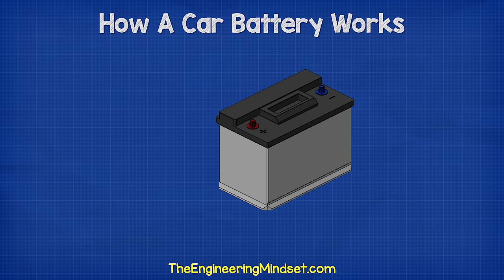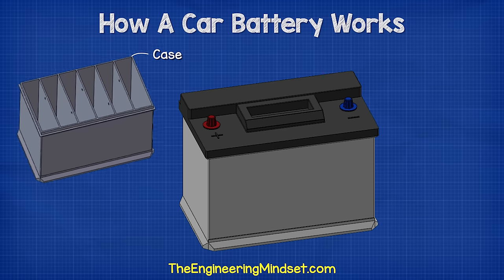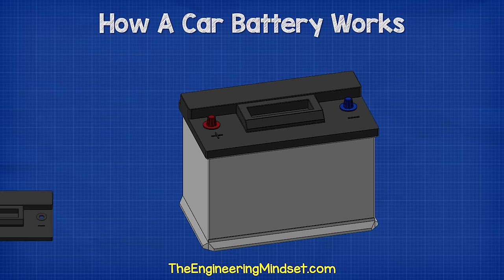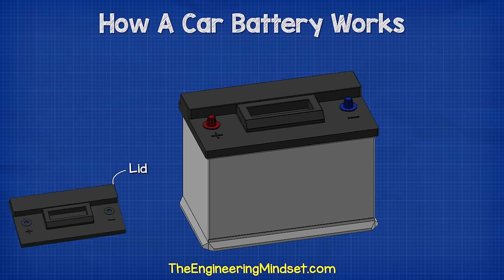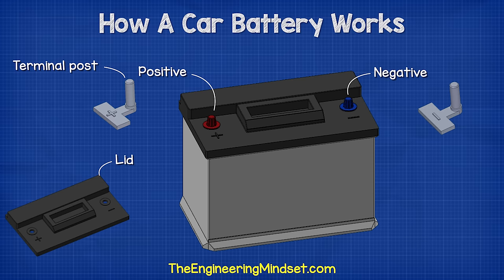Let's have a look at the main parts of a car battery and then we'll understand how it works. First of all we have the plastic case which holds all the internal components in place. On the top we have the plastic lid, and there are two terminals — a positive and a negative.